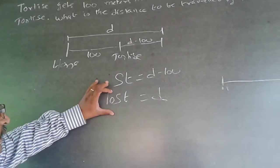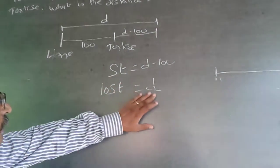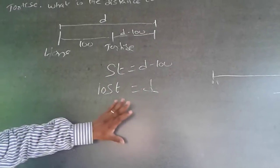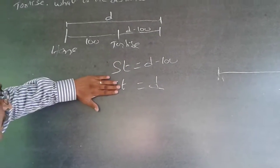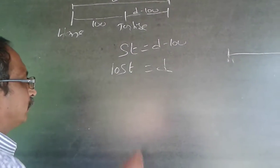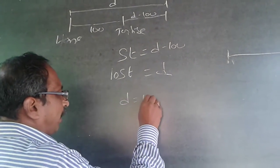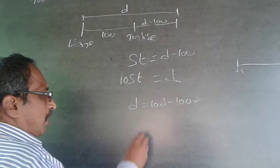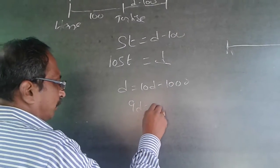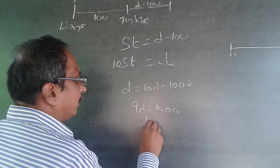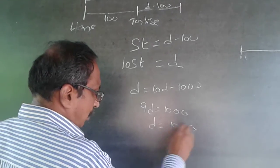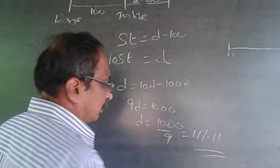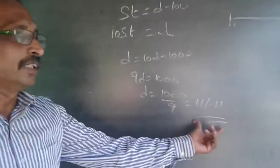So we have: tortoise distance = s·t = d − 100, and hare distance = 10s·t = d. This means d equals 10 times of (d minus 100). So d = 10d − 1000, which gives 9d = 1000, therefore d = 1000/9, which equals 111.11.